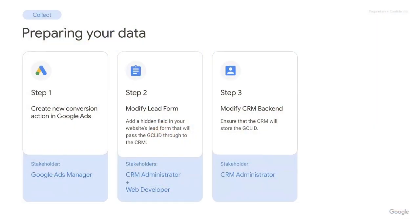Once the user has clicked submit, the Google Click ID gets transferred into the CRM or the database or the lead management tool your company is using. In order for it to be held and stored there, we are going to need to modify the CRM backend — and this is exactly what step three is: modifying the CRM to add an additional field for the Google Click ID, which you will title 'Google Click ID'. This field needs to support 120 alphanumeric characters and is handled by the CRM administrator.